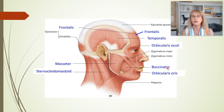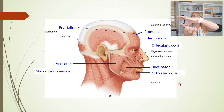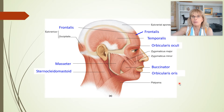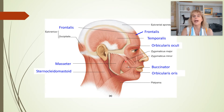We've got two muscles that are both called orbicularis: the orbicularis oculi and the orbicularis oris. An orb — like in a science fiction movie where the wizard holds a glowing sphere — so the orbicularis is a circular muscle. The orbicularis oculi goes around the eye, and the orbicularis oris goes around the mouth.